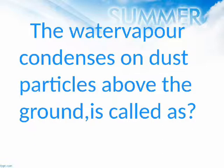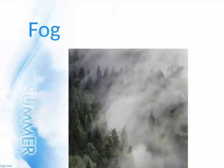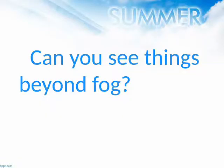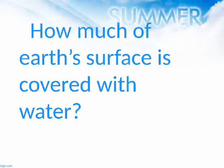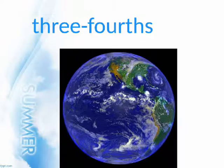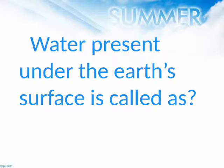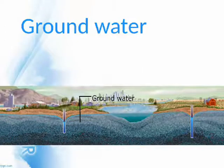The water vapor condenses on dust particles above the ground is called? Fog. Can you see things beyond fog? No. How much of Earth's surface is covered with water? Three-fourths. Water present under the Earth's surface is called? Groundwater.